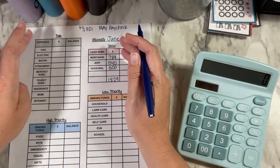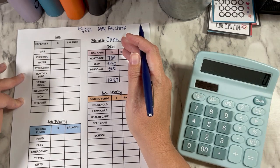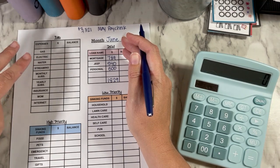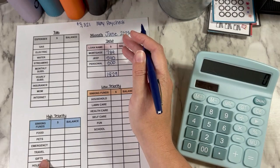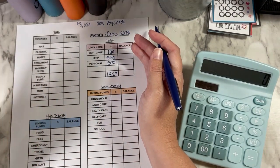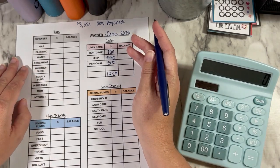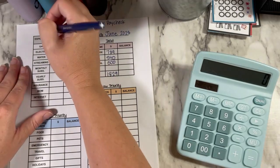So then what I do is I go over here and I do the things that I consider bills that I budget the same amount every month. There's also a few things in the high priority and low priority that I take out a certain amount every month no matter what. So for gas, this time I'm going to do $125.